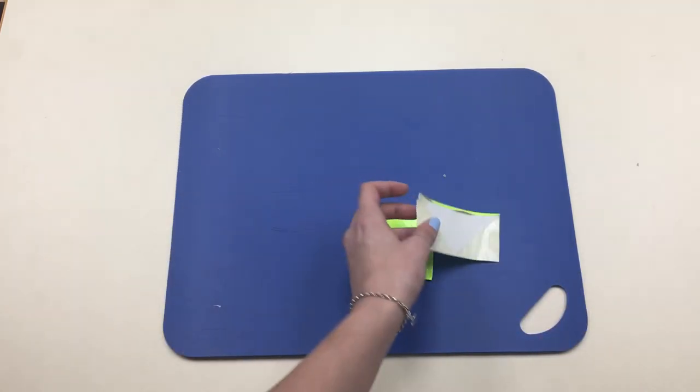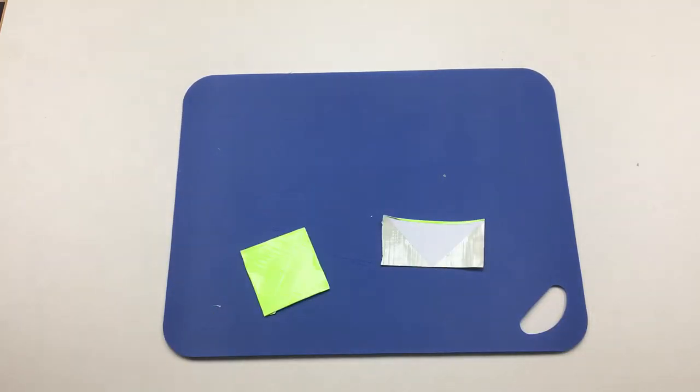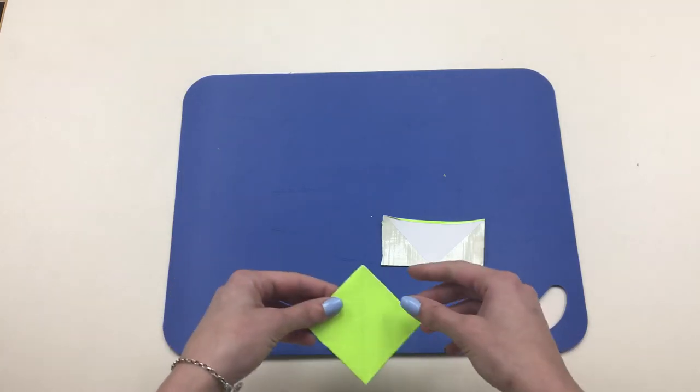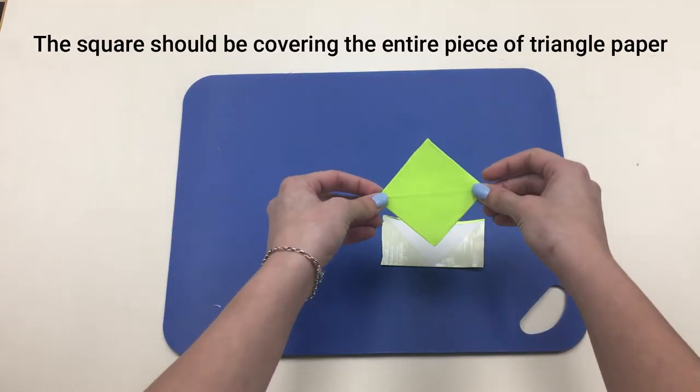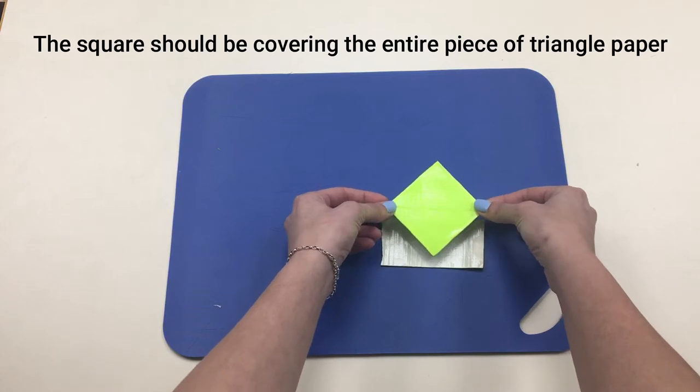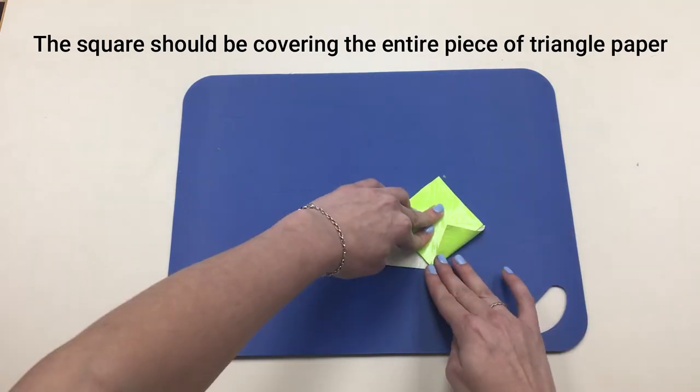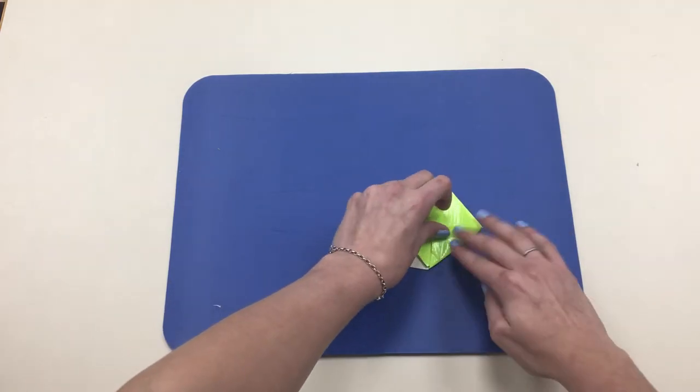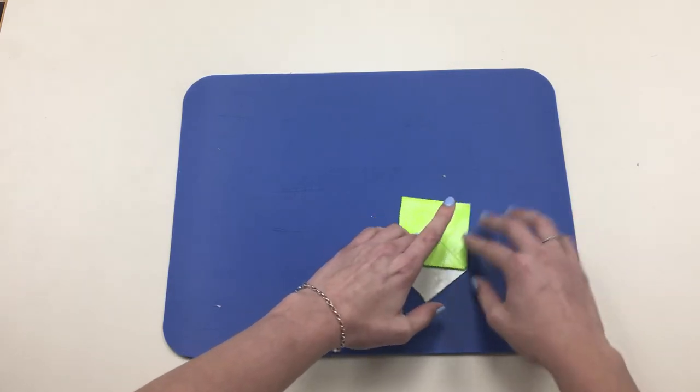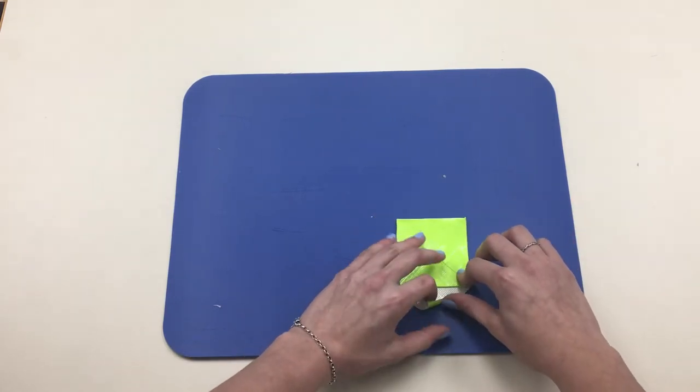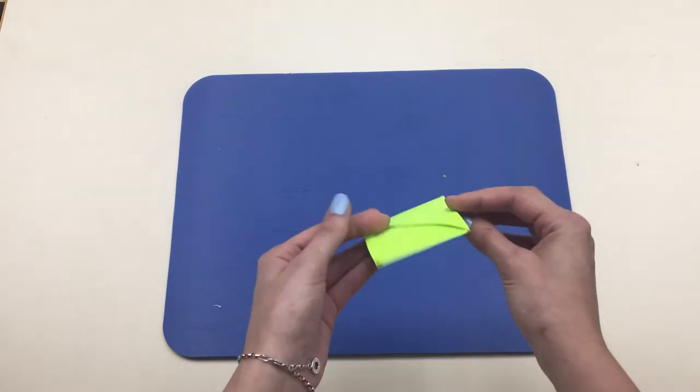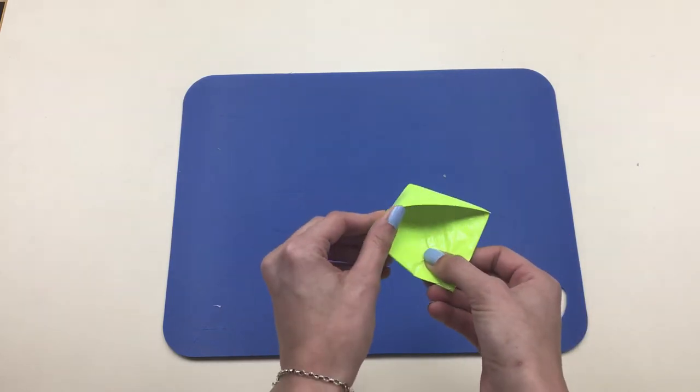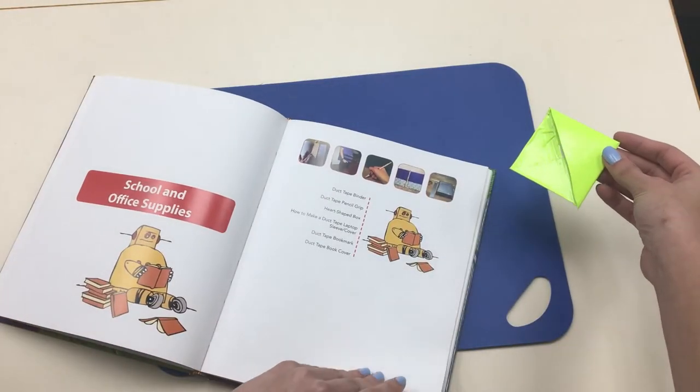Using our piece from before, take the square and line it up with the corners of the triangle piece. Fold in the edges. You are now done. You can use this on the corner of your book to save your spot.